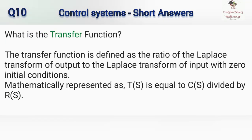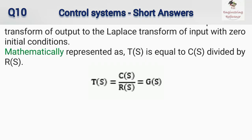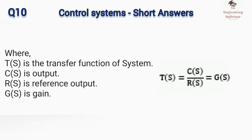What is the transfer function? The transfer function is defined as the ratio of the Laplace transform of output to the Laplace transform of input with zero initial conditions. Mathematically represented as: T(s) = C(s) / R(s), where T(s) is the transfer function of the system, C(s) is the output, R(s) is the reference input, and G(s) is the gain.